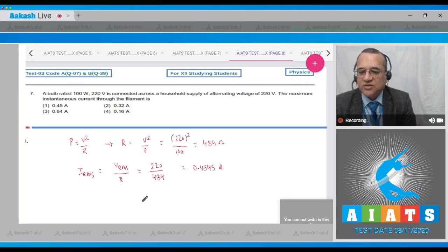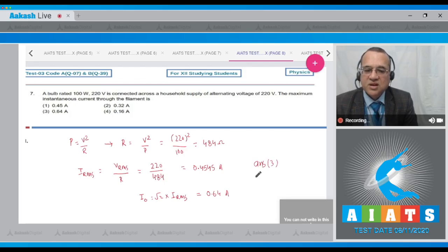Now, what is asked is the maximum value of the current. And you know that the maximum value of current is root 2 times IRMS. So multiply by this, this would approximately be equal to 0.64 ampere. So look at the options. The third option is 0.64 ampere. So answer to this question is 3.